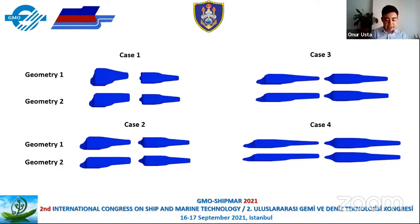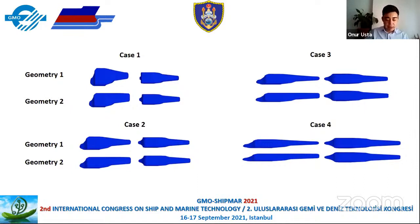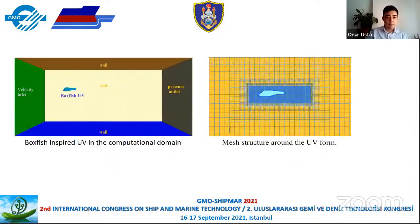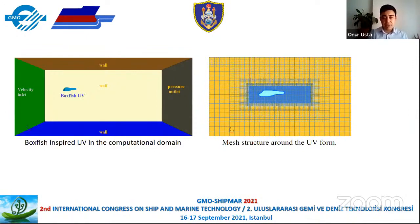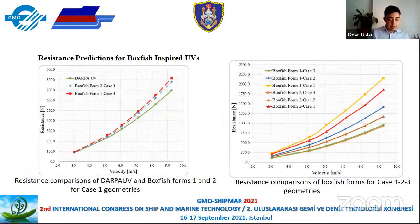The forms of Case 4 are generated having the same length as the DARPA underwater vehicle model. Please note that all displacements are equal to each other and also equal to the DARPA model. CFD analysis of these forms was carried out under the same conditions as the DARPA model. Here you see some images from the CFD simulations, including the boxfish-inspired underwater vehicle in the computational domain and the mesh structure around the vehicle form.